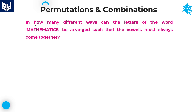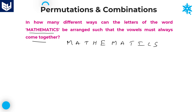Next question. In how many different ways can the letters of the word 'Mathematics' — spelled M-A-T-H-E-M-A-T-I-C-S — be arranged such that the vowels always come together? Here also the same condition is given. First of all, write down all the vowels separately: A, E, A, I. These are the four vowels.